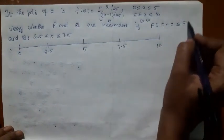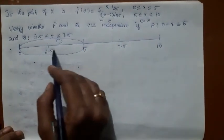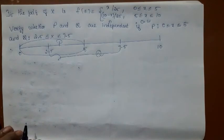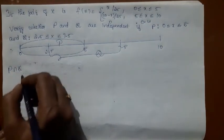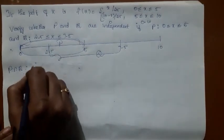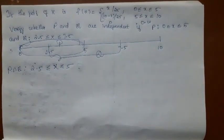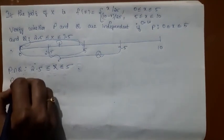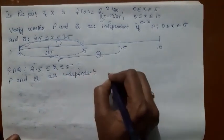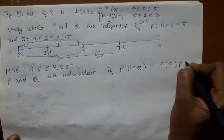What is P? X lies between 0 and 5 — so this is your P. And what is Q? X lies between 2.5 and 7.5 — this is your Q. Now we want P intersection Q. This is your P and this is your Q. P intersection Q is 2.5 ≤ X ≤ 5. The problem is to test whether P and Q are independent. P and Q are independent if probability of P∩Q equals probability of P times probability of Q.